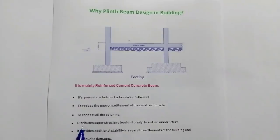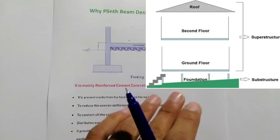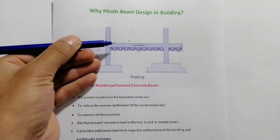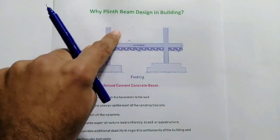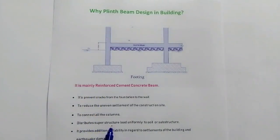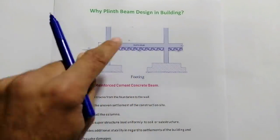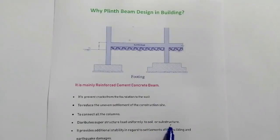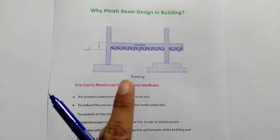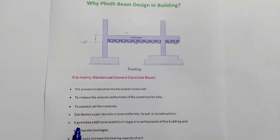The fourth purpose of plinth beam is to distribute the superstructure load uniformly to the soil or substructure. In a building we have superstructure and substructure. We design plinth beam to transfer the load of the walls — the load above the plinth beam, which is called the superstructure — distributing it to the soil or substructure, meaning the foundation.